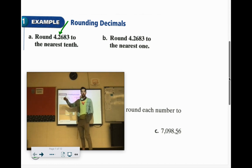Now you're either going to keep it 4.2 or you're going to bump it to 4.3. So you look at the place right behind it. Five or higher, you bump it up. Right behind it is 6. So we're going to bump that up to 4.3.